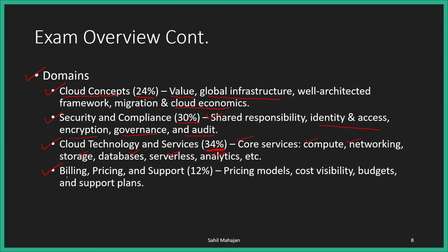The fourth and final domain is billing, pricing and support, which has a weightage of 12%. Here you'll cover concepts like pricing models, how pricing works on the cloud, cost visibility, how to look at your costs and budgets, and of course support plans in case you run into any issues on the AWS platform.